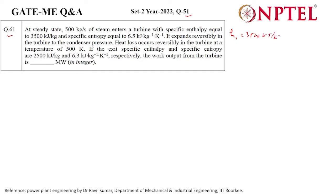The specific entropy is equal to 6.5 kilojoule per kg kelvin. It expands reversibly in the turbine at the condenser pressure. Heat loss is taking place at the temperature of 500 kelvin. The exit specific enthalpy is 2500 kilojoule per kg and entropy is 6.3 kilojoule per kg kelvin.